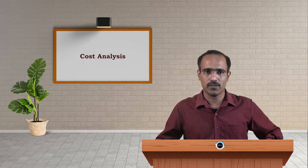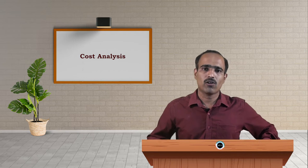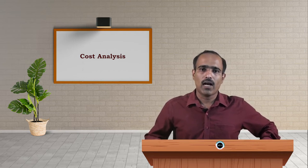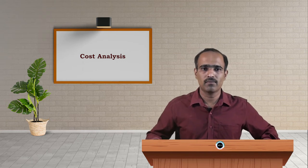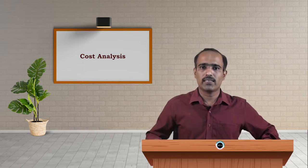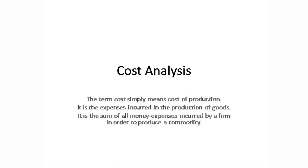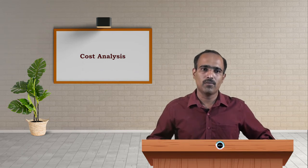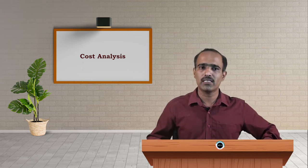Cost is calculated by taking into consideration the rewards given for the various factors of production. As we all know, there are four factors of production: land, labor, capital, and organization. These factors are not available freely — they must be rewarded by the producer or the firm undertaking the production activity, in terms of money. Land is rewarded in terms of rent, labor in wages, capital in interest, and organization in profit.